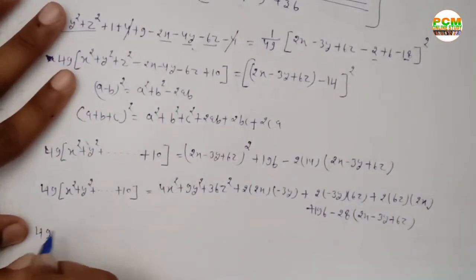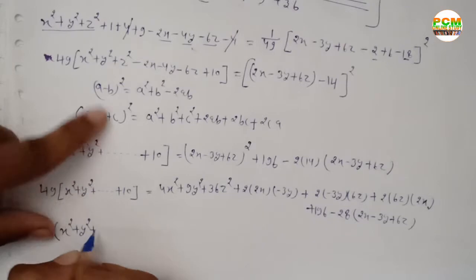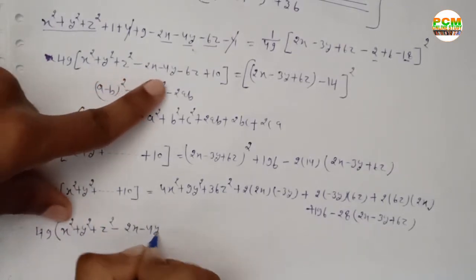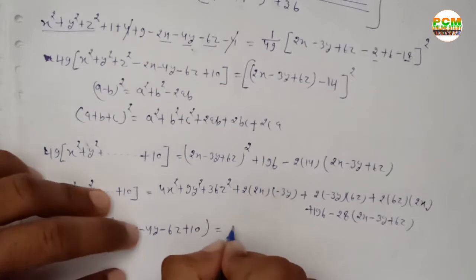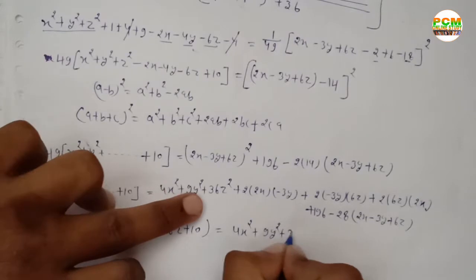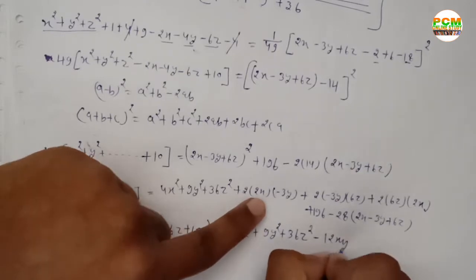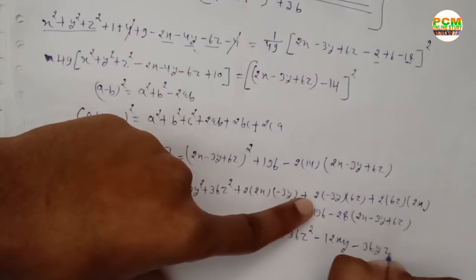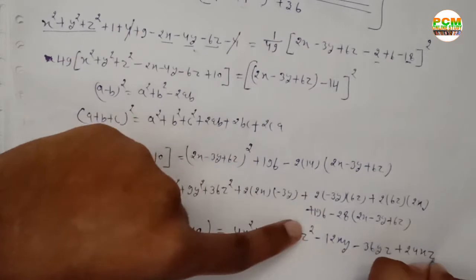So now: 49(x² + y² + z²) plus lower-order terms on the left equals 4x² + 9y² + 36z² - 12xy + 24xz - 36yz + 56x - 84y + 168z + 196 on the right. We move all terms to one side to collect and simplify.